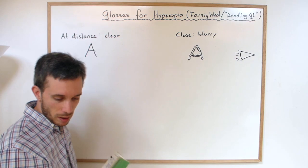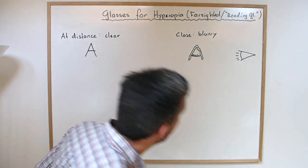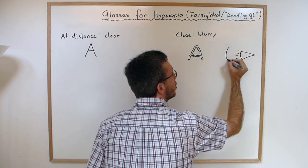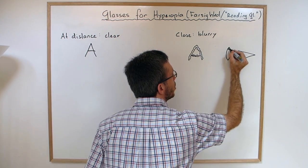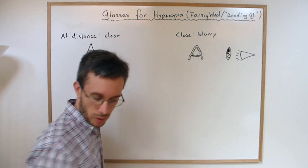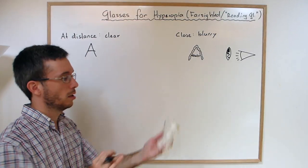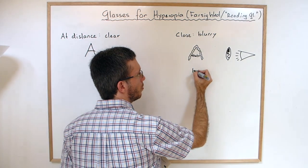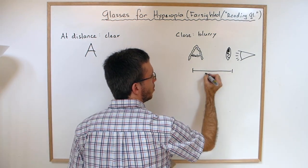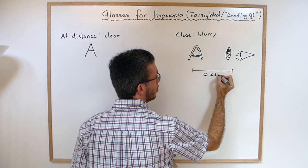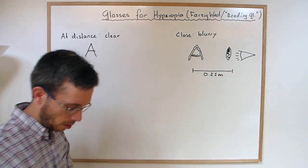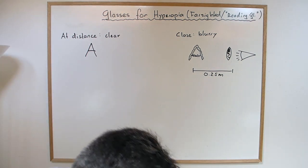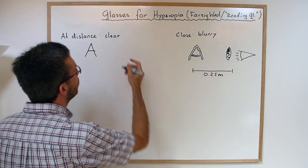So what we need in this case, we need some kind of glasses that will, out of the object that is close up - I want to read a text at a distance of let's say 25 centimeters - my text needs to have an image of it created that is further away.